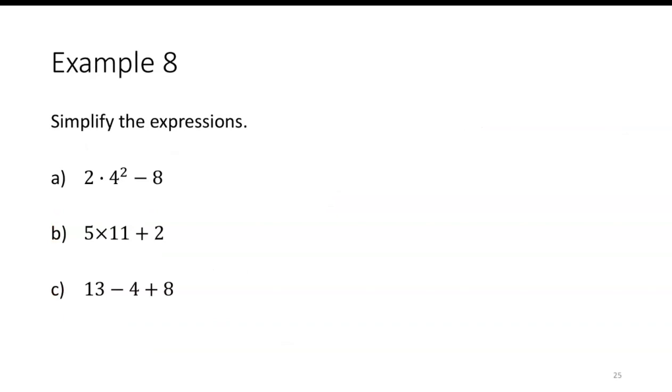So 2 times 4 squared minus 8. No parentheses, so I would start with the exponent. So 2 times 4 squared is 2 times 16 minus 8. Then I would deal with the multiplication. 2 times 16 is 32, and 32 minus 8 is 24.